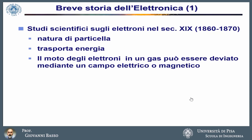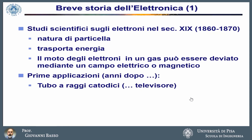Rigorous scientific studies on electronics started in the second half of the 19th century. In that time, it was discovered that the electron has a particle nature, that an electron transports energy, and it was also discovered that the motion of electrons in a gas can be deviated by the action of an electric field or a magnetic field. From these studies, the first applications of electronics were born.